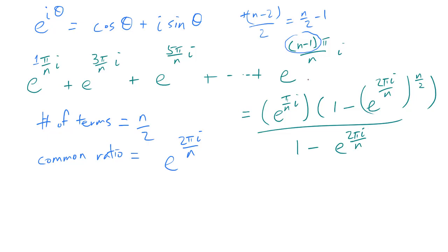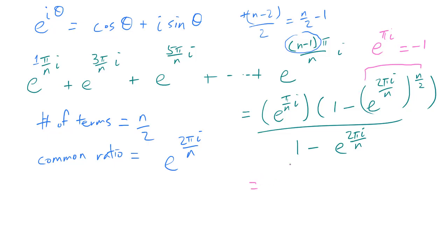Let's evaluate: e to the 2 pi i over n, raised to the n over 2, is e to the pi i, which by Euler's identity is cosine pi plus i sine pi, equaling negative 1. So the numerator factor becomes 1 minus negative 1 equals 2. The entire expression simplifies to 2 times e to the pi over n times i, divided by 1 minus e to the 2 pi i over n.